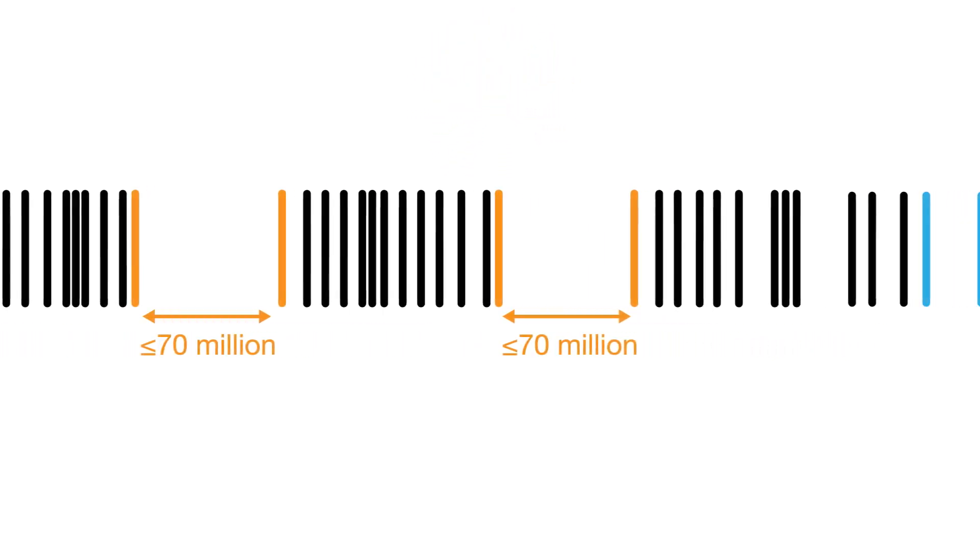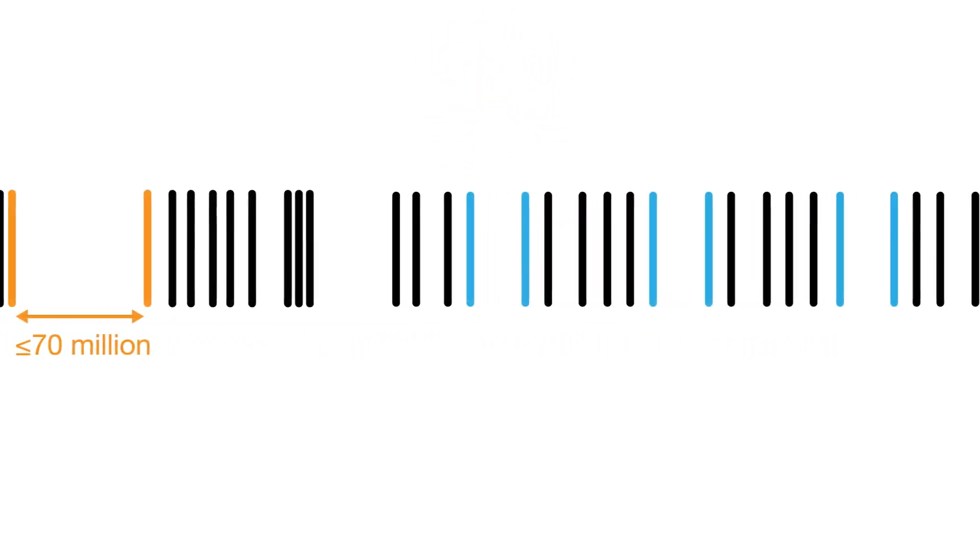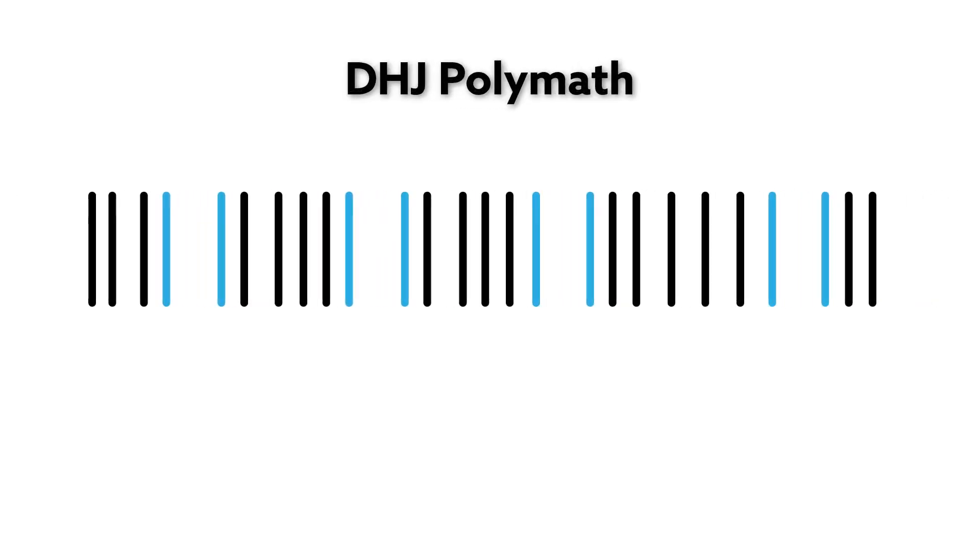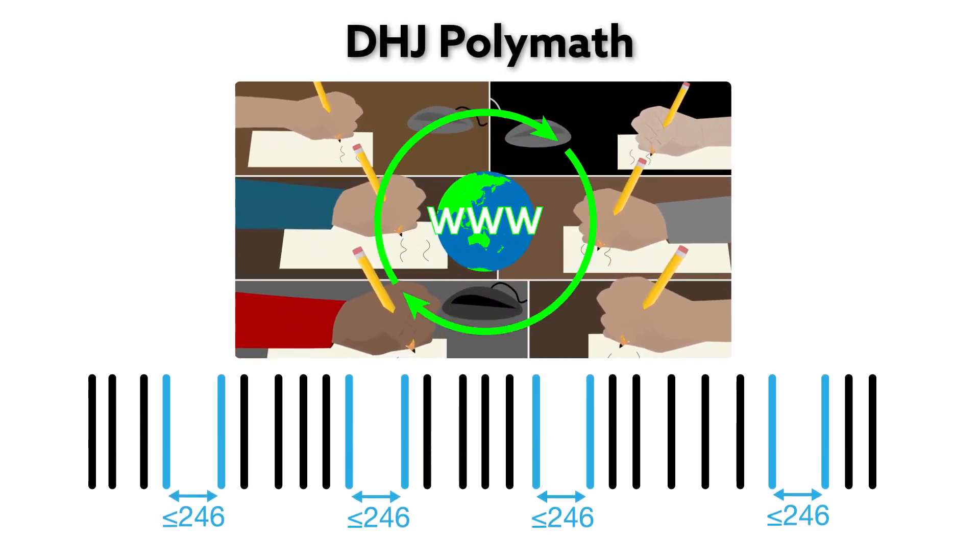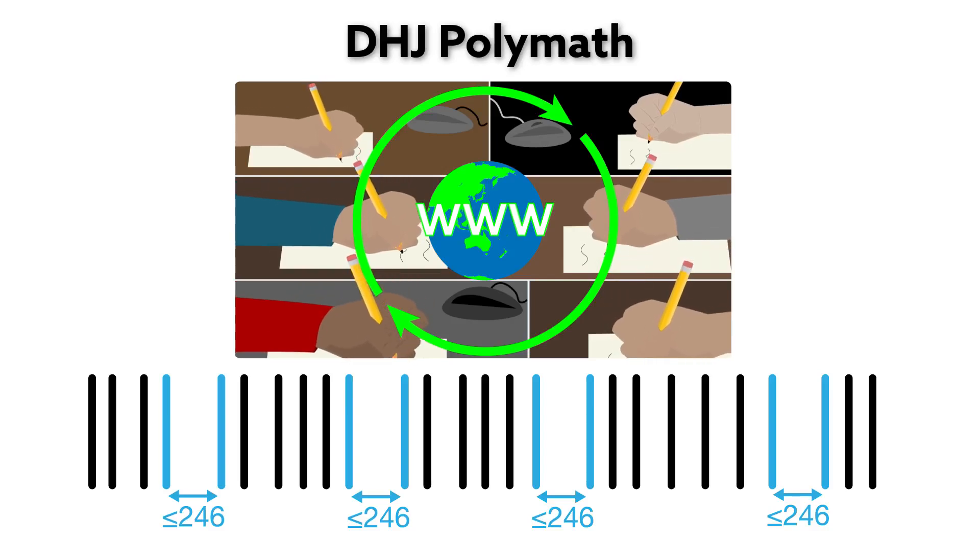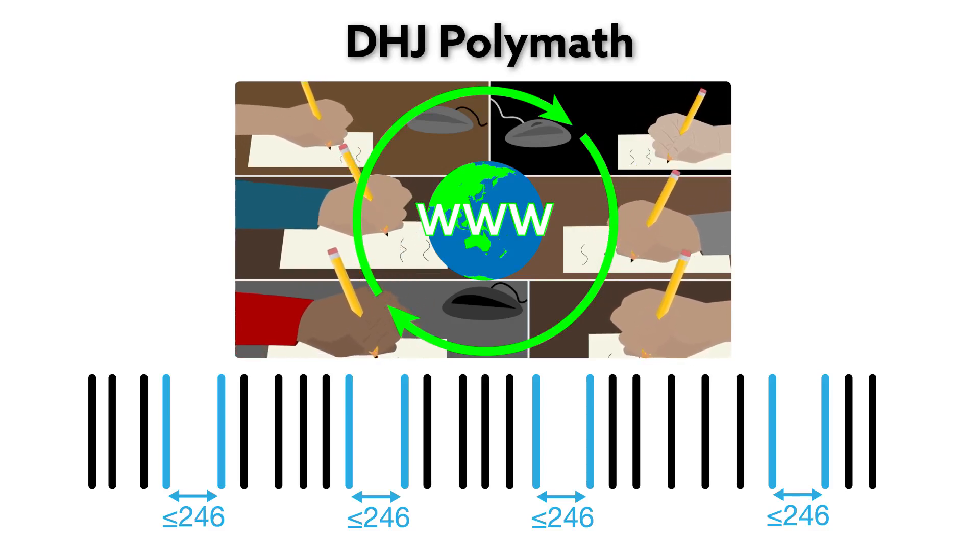Since then, an international team of researchers working under the pseudonym DHJ Polymath has closed the prime gap tremendously. Dispelling the image of a solitary mathematical genius, the group collaborated almost entirely through the Internet to set the current record at 246.